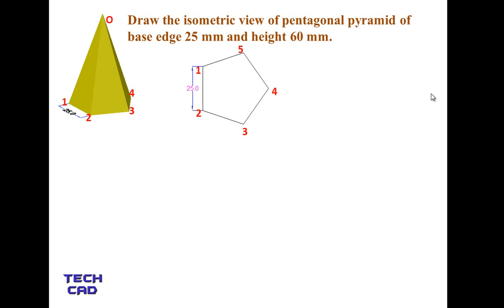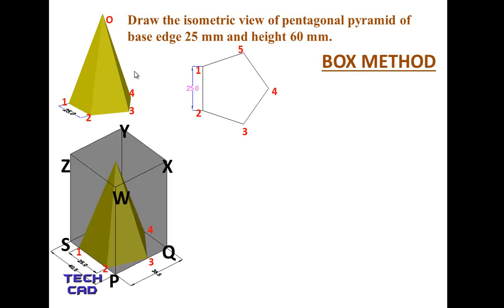To start making the isometric view of this pyramid, we have to follow a method called the box method. The box method says that you have to put your solid — in this case the pentagonal pyramid — inside a box. PQRS is the base and WXYZ is the top of the box, and you place the pyramid exactly inside that box. So whenever you put your solid in the box and draw the box first in isometric view, that is the box method.